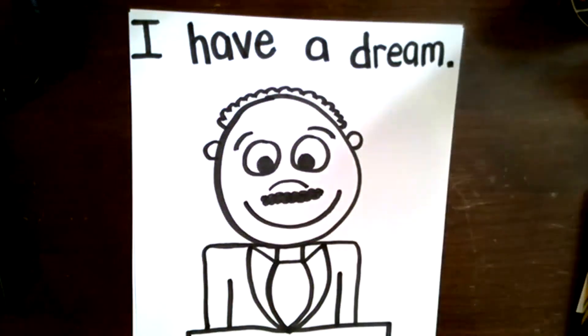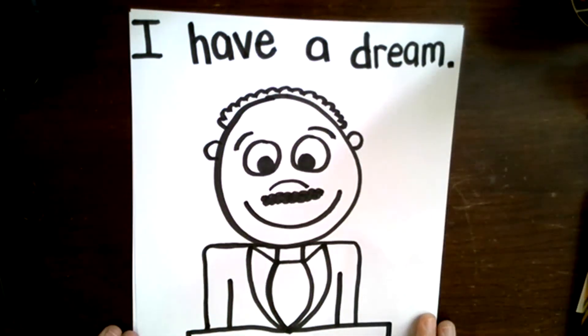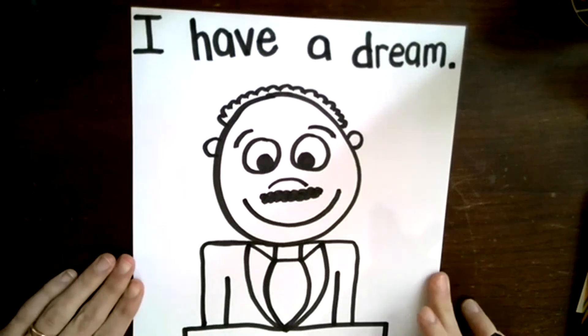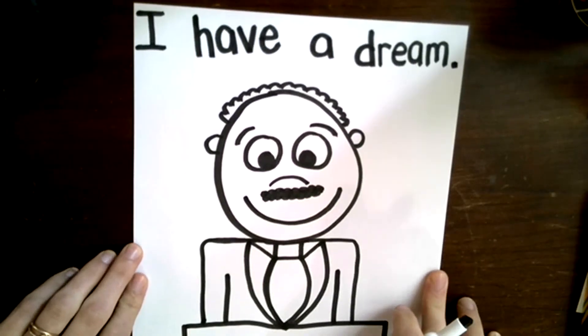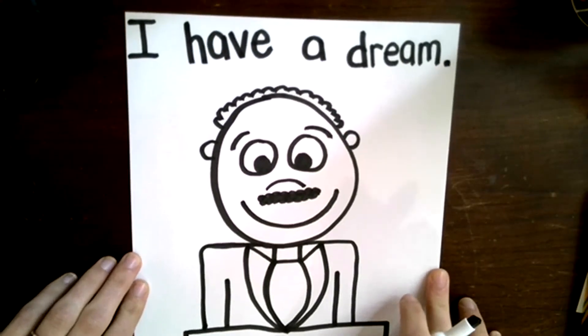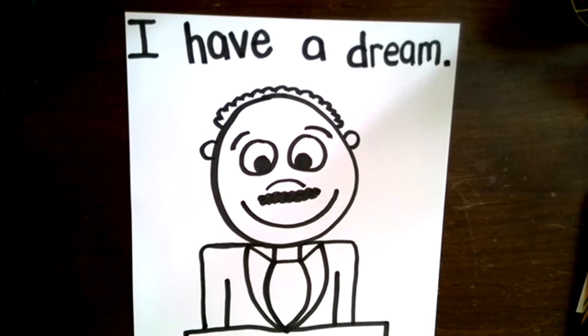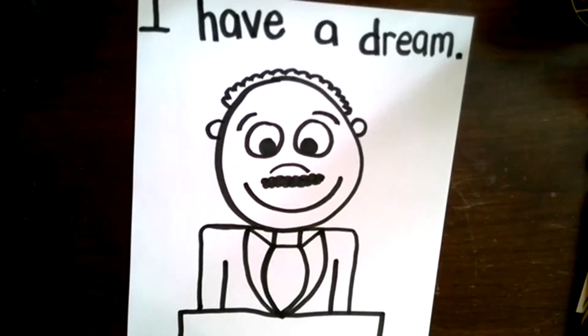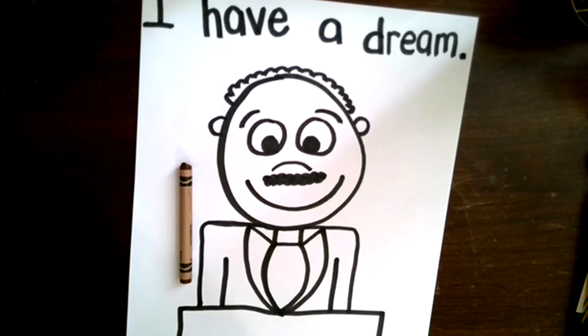And I'm going to put a period. 'I have a dream.' Maybe you didn't write that as fast as Miss Waldron, and that's okay, you're learning. Go ahead and copy it as best you can. You can always pause the video if you need to. Alright, I'm going to get out my crayons. You're going to need a brown crayon and a blue crayon and a black crayon.